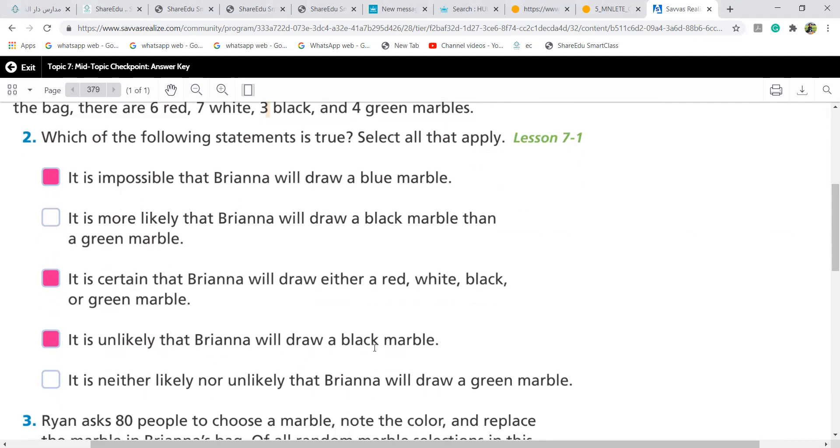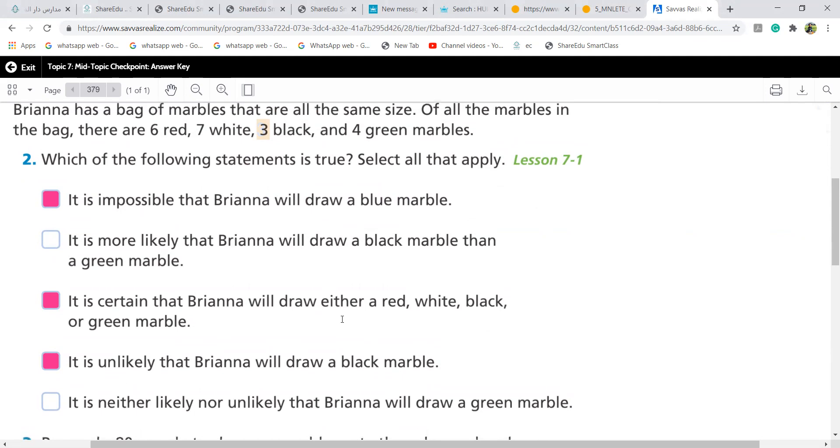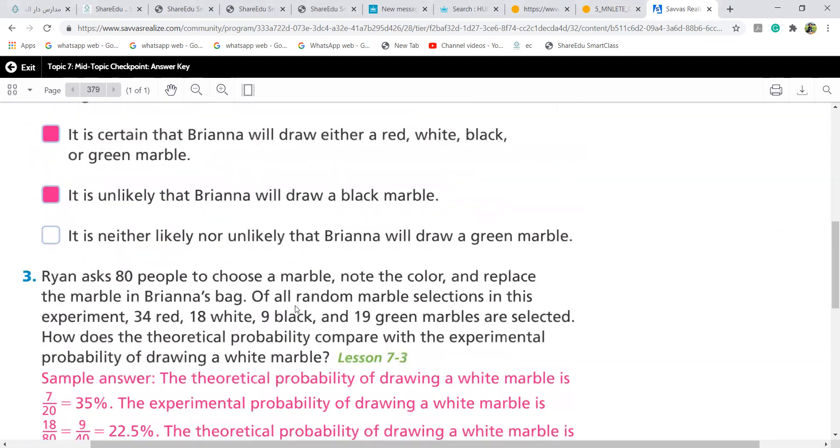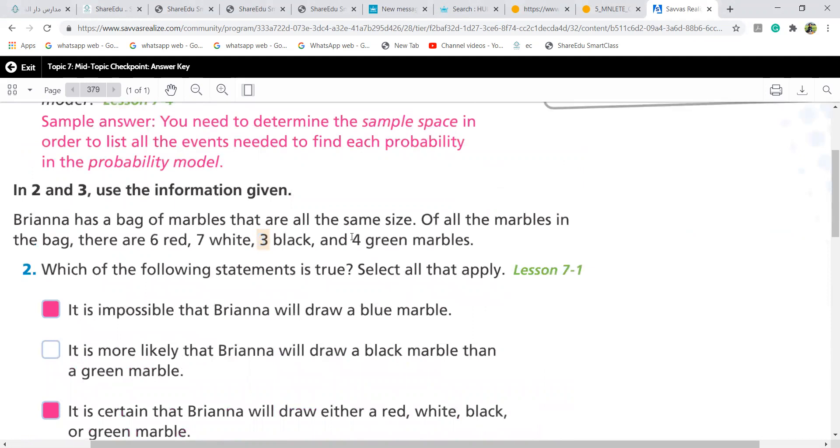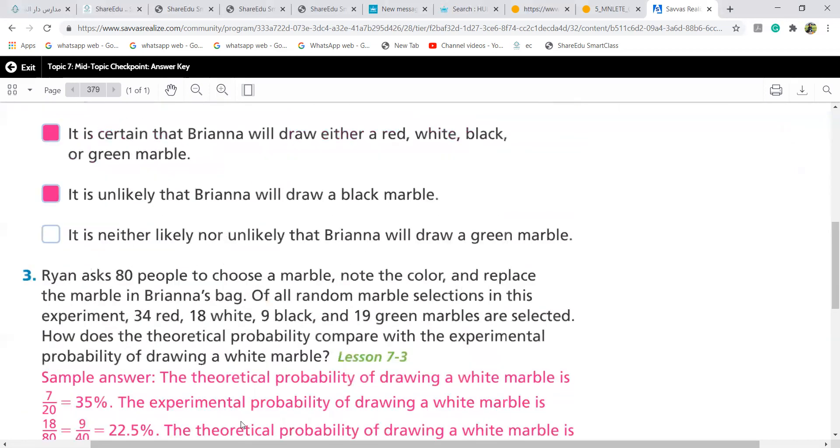It's unlikely that Brianna will draw a black marble. So why did they say unlikely? Because it's the least. Which one is the likely here? Seven is likely because out of so many marbles, you will see the most of them are white. So it is likely. We can never say neither likely or unlikely until it is exactly 50%. So they are saying about green marble. We have four green and total, we have six, seven, ten, sixteen, twenty. Out of 20, if I say four, is it neither likely or unlikely? It is shown that it is unlikely.